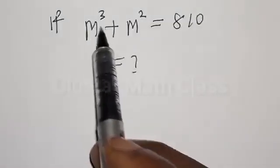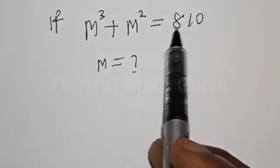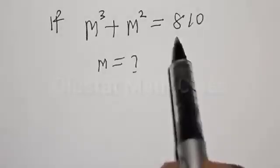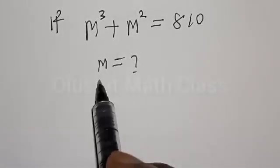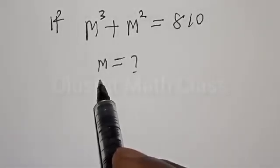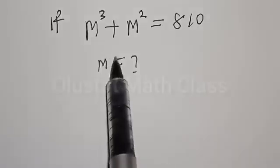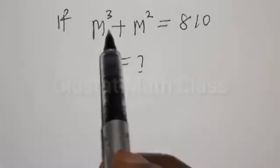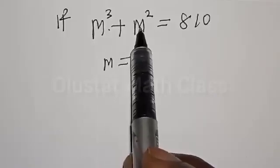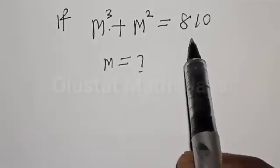If M³ plus M² is equal to 810, what is the value of M? Welcome to my class. In today's class, we want to look at how we can quickly find the value of M from this given equation: M³ plus M² is equal to 810.